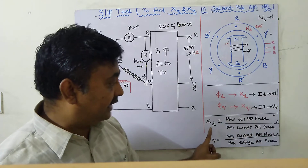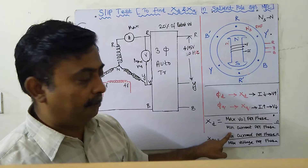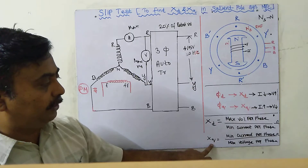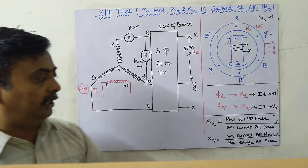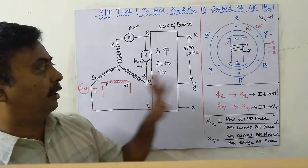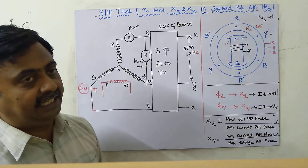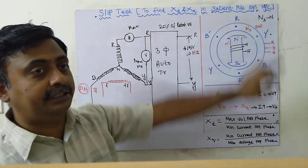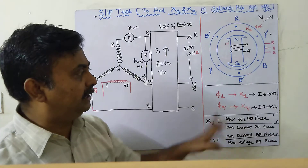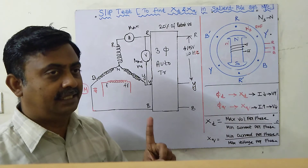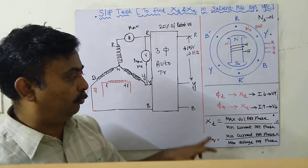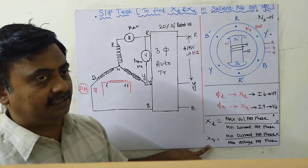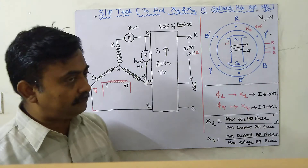Similarly, Xq = minimum voltage per phase divided by maximum current per phase. We apply these formulas to find Xd and Xq. The slip test is used to find Xd and Xq in a salient pole synchronous machine. For a non-salient pole synchronous machine, there are no two separate reactances — there is only one reactance. But in a salient pole machine, there are two reactances: the direct axis reactance Xd and the quadrature axis reactance Xq, both in ohms.